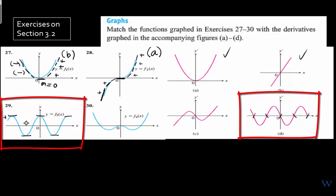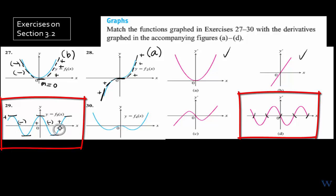Let's check the signs of the derivative function by looking at the slopes of the blue curve: positive, negative, positive, negative, and then positive again. It's positive, then became negative; after the zero, positive; negative; then positive again until hitting a zero. Positive slope, negative slope, positive slope, negative, and then positive. So sure enough, letter D is matched with number 29.